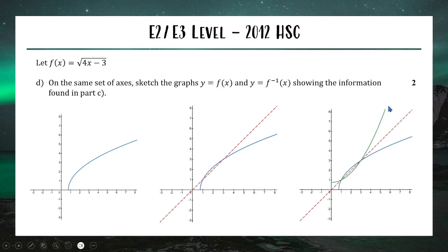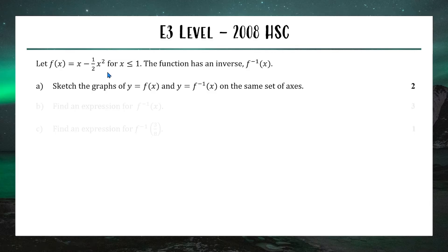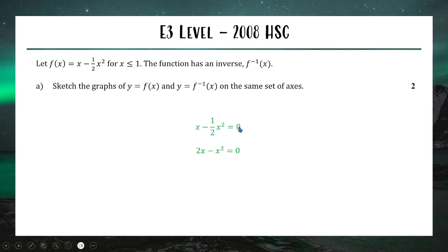Our next question is a full E3 from 2008. We have a quadratic function with a restricted domain of x ≤ 1 — so only part of the parabola. Part a asks us to sketch the function and its inverse. The parabola is concave down; setting it equal to zero (and multiplying by 2 to clear fractions) gives x(2 − x) = 0, so x-intercepts at 0 and 2. Since the turning point is at x = 1, we only sketch the left-hand side for x ≤ 1.